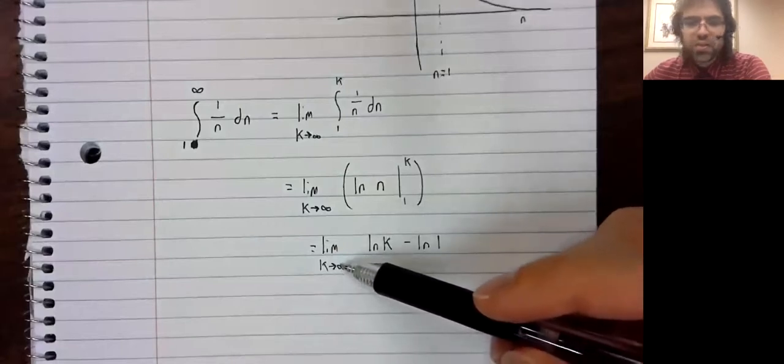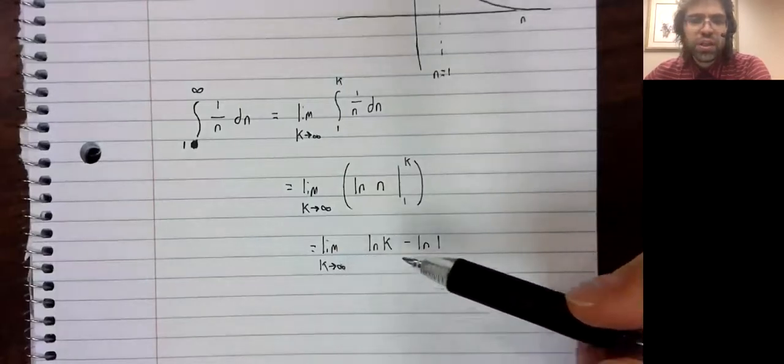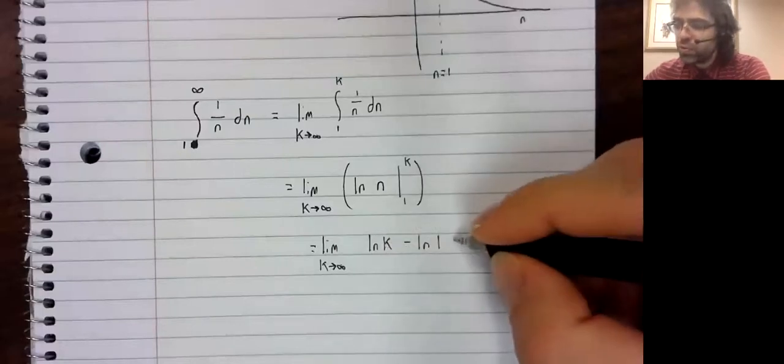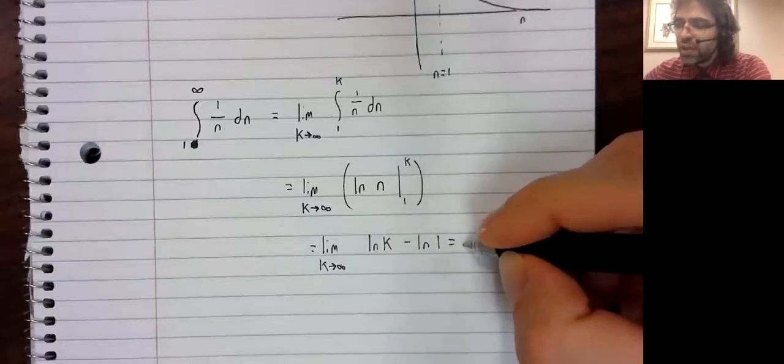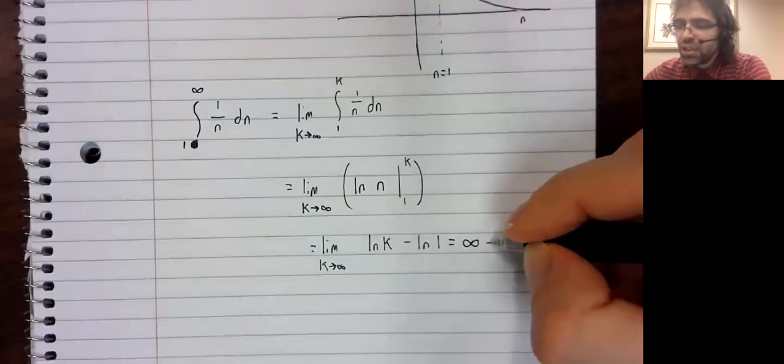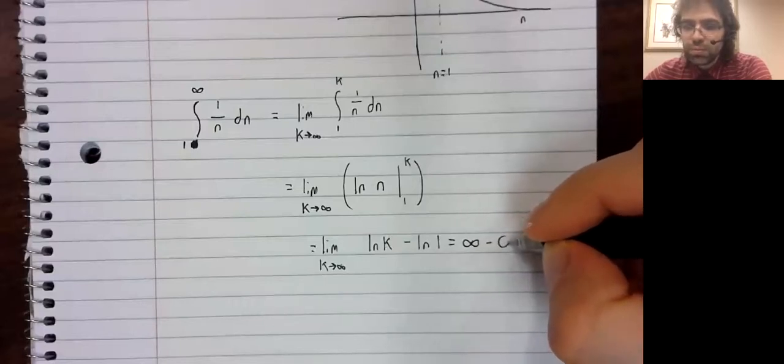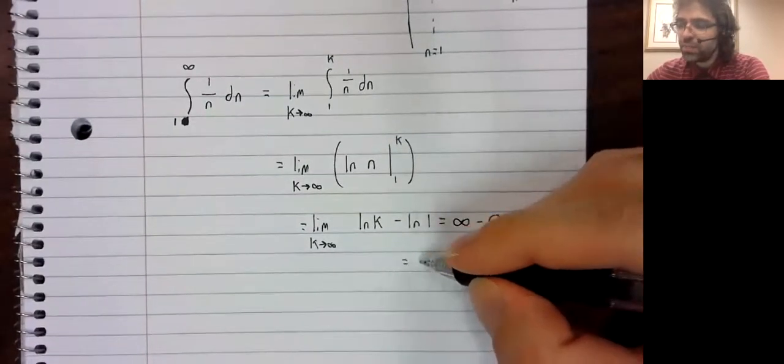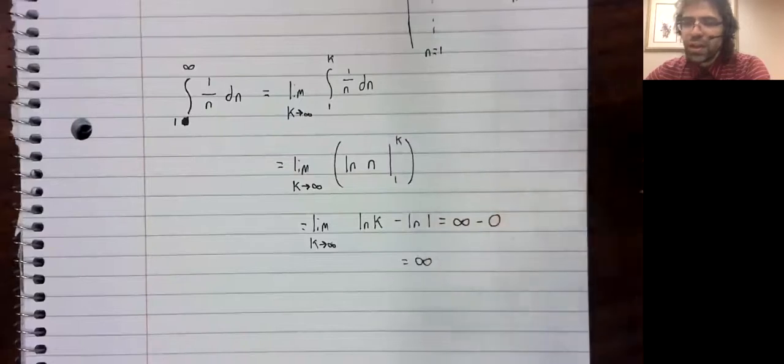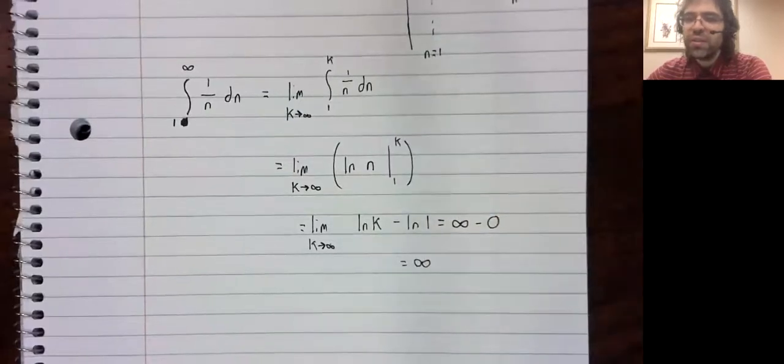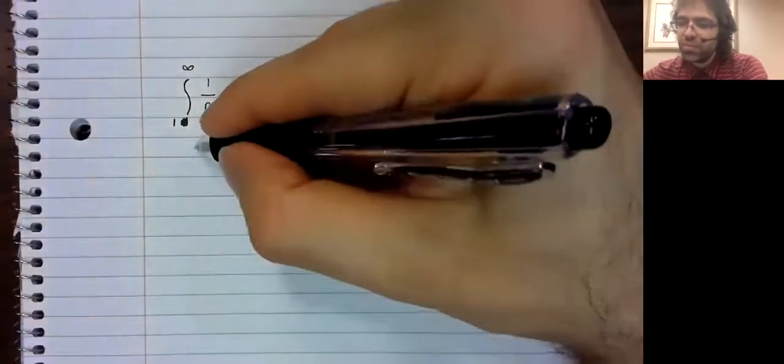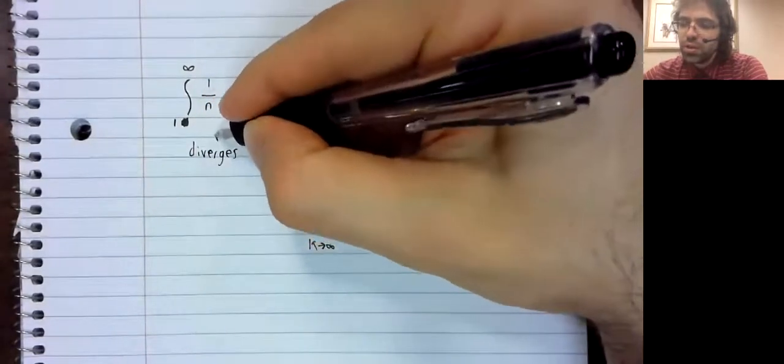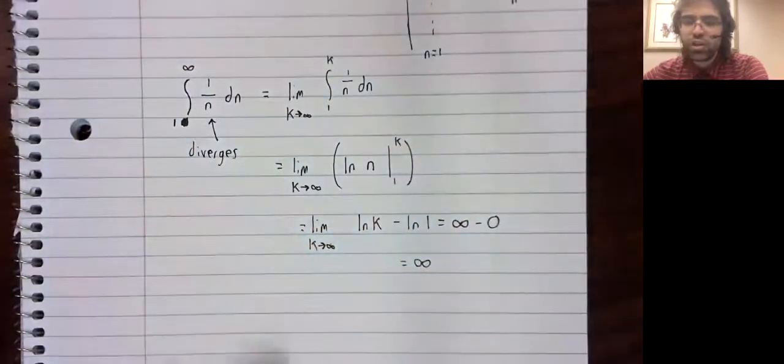And as k goes to infinity, the natural logarithm of k goes to infinity. It's an extremely slow process, but it does happen. And this limit is infinite. This integral diverges.